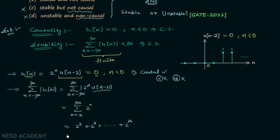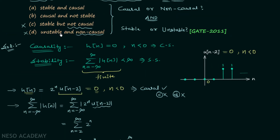The sum we get is equal to infinity. This means we are not getting a finite value as the result of this summation, and therefore the system is unstable. So the final answer is option B — causal and not stable. This is the correct option.